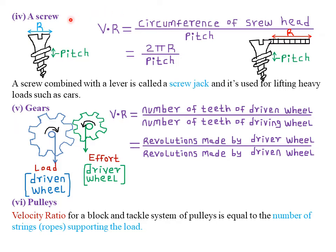Today we are looking at further examples of some simple machines. The first simple machine we are looking at is the screw. So remember, the screw has what we call the screw head, and it also has what we call the pitch.